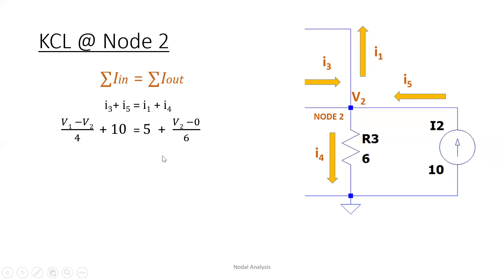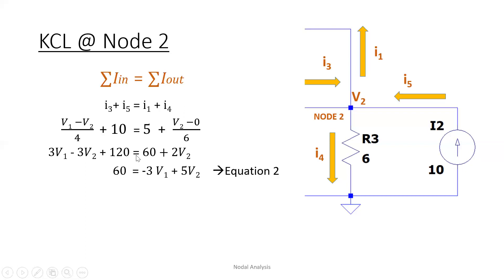Finding the LCD of 4 and 6, which is 12: multiply through to get 3V1 - 3V2 + 120 = 60 + 2V2. Transposing gives negative 3V1 + 3V2 + 2V2 = 60 - 120 + 60. The second equation is: 60 = -3V1 + 5V2.